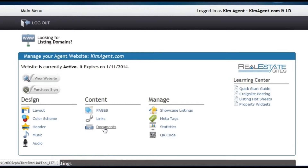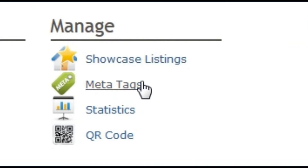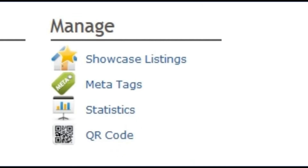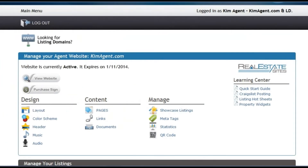The last category is called manage. Here you can select your showcase listings, modify your meta tags, view our internal website statistics, and download your website's QR code so you can have it added to your business cards or any other type of print marketing.